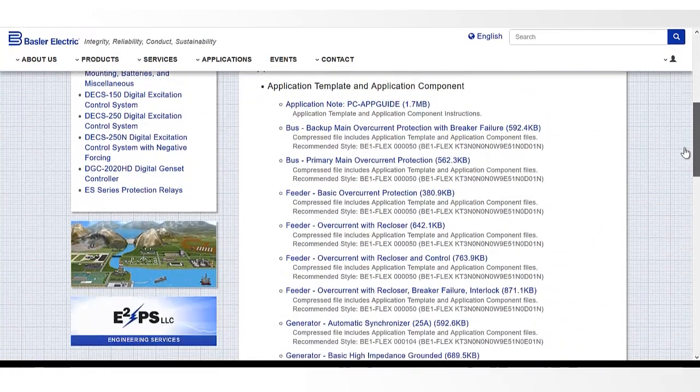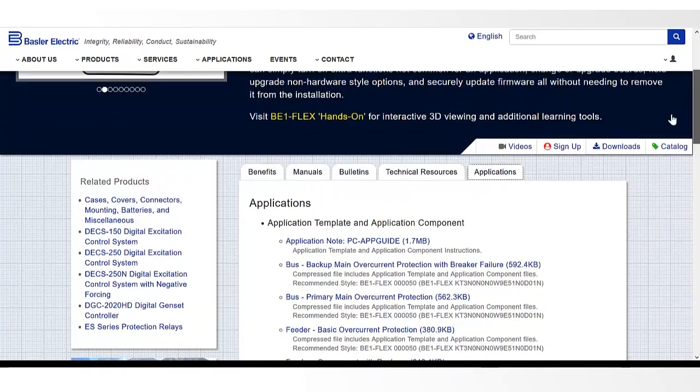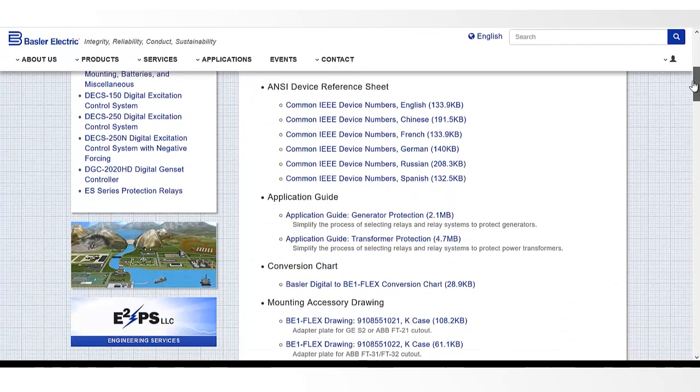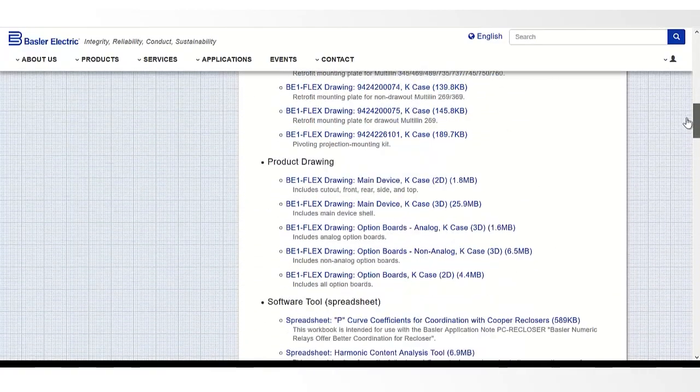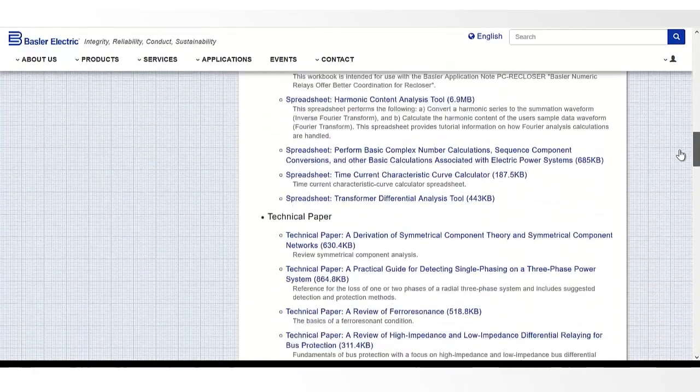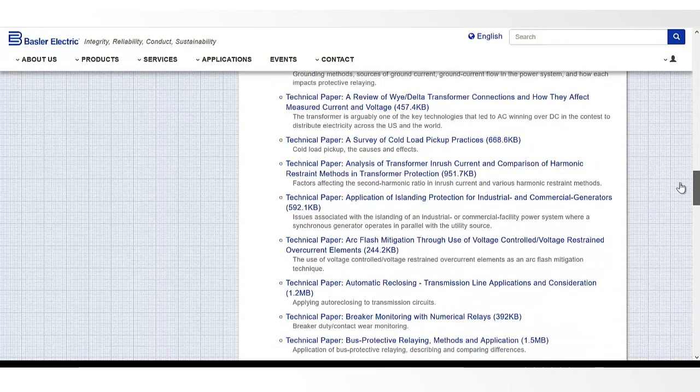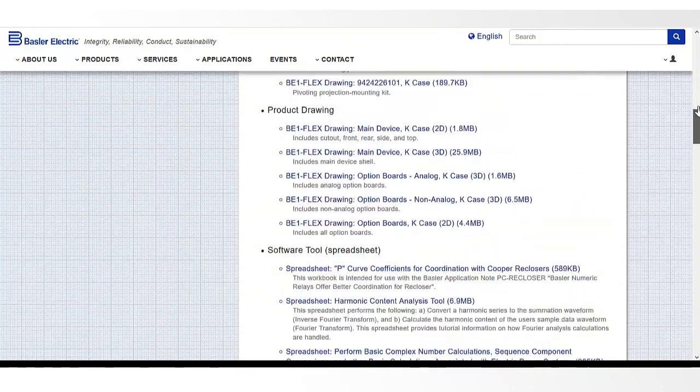Basler offers downloadable drawings, 3D models, and other technical resources to make your job easy. You also have access to a variety of pre-developed application templates and software settings files for common protection schemes so that your BE-1 Flex can be set up and ready to go in minutes.